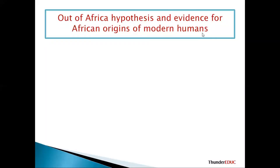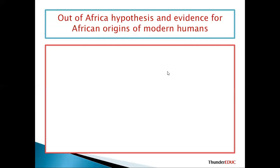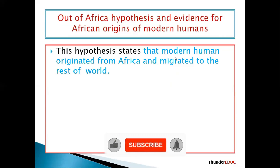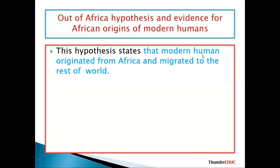The Out of Africa hypothesis states that modern humans originated from Africa and migrated to the rest of the world. Note: you must say modern humans — if you just say humans, that is incorrect. Modern humans, Homo sapiens, originated from Africa and migrated to the rest of the world. That is the Out of Africa hypothesis.